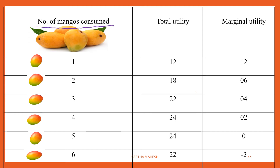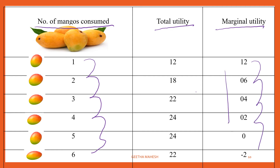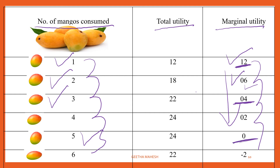Let us understand the law of diminishing marginal utility with the help of a table. The table shows the number of mangoes consumed, total utility, and marginal utility. When a person consumes the first mango, utility derived is 12. When he consumes the second mango, utility derived is 6, which is less than the first. When he consumes the third mango, utility derived is 4, which is less than the second. So marginal utility keeps on decreasing. When he consumes the fifth mango, utility derived is 0, and for the sixth mango it is minus 2.